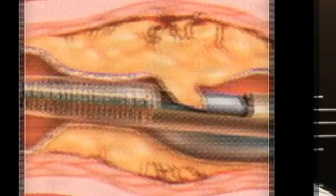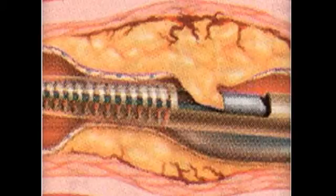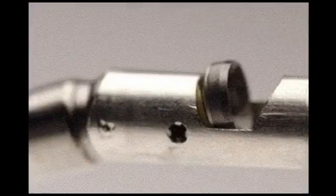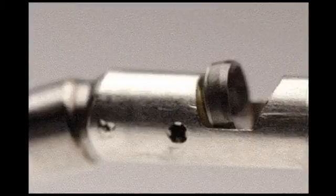What is an atherectomy? In this diagram, this is an example of atherectomy, where we can actually shave the inside of the plaque free from the vessel wall. This example shows an atherectomy catheter, which contains a carbide cutting tip and a blade which spins at approximately 8,000 revolutions per minute in order to shave the plaque from inside the vessel wall.